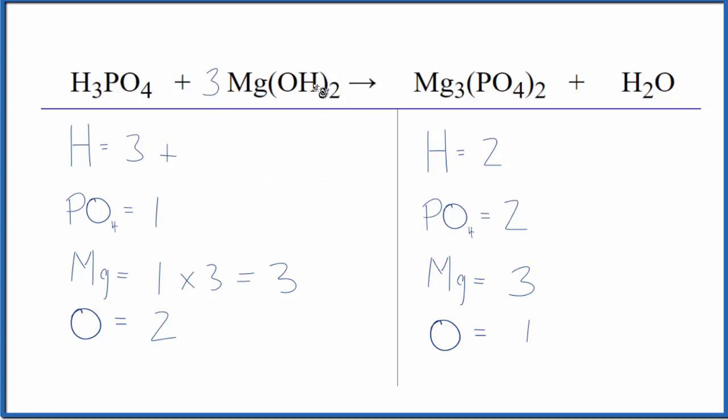So for my hydrogens, I have the one times two, that gives me two, and the three is multiplied by everything, so three times those two, that gives me six. So now I have nine, still have one phosphate, still have three magnesiums,